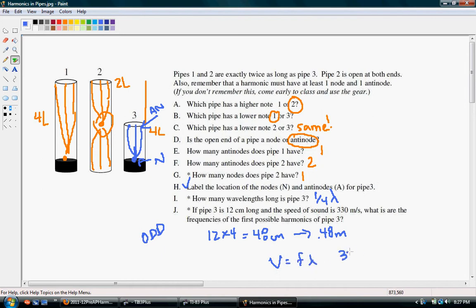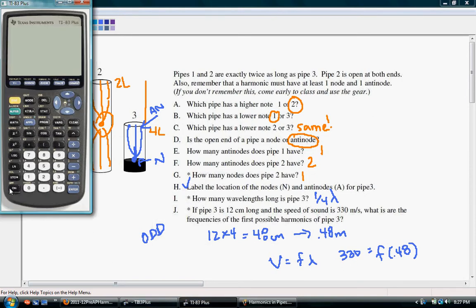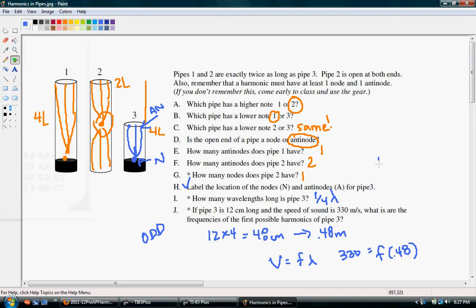Now we know that velocity is equal to frequency times wavelength. If the velocity is 330 meters per second, we can find the frequency by taking that speed, dividing by the wavelength. So we'll pull out our trusty calculator. 330 divided by 0.48 will give us the frequency of 687.5.